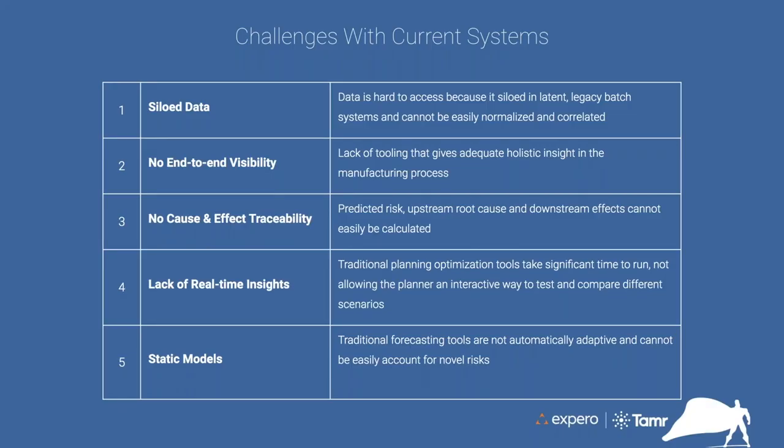Digging into those challenges — these are the top five we see a lot within supply chain, specifically around planning and the manufacturing process. First, data is siloed across multiple systems: ERP systems, spreadsheets, computers under someone's desk not connected to the Internet. We need to take that, stitch it together into a fabric, and then build some insights off of it.